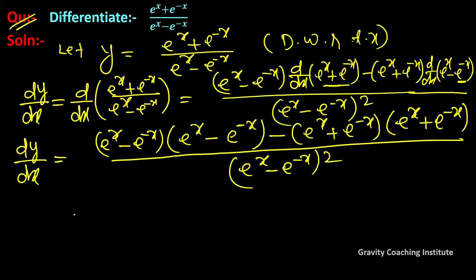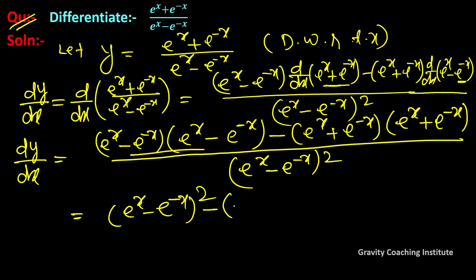यह दोनों identical terms हैं तो हम इसको whole square लिख सकते हैं। Numerator में (eˣ − e⁻ˣ)² minus (eˣ + e⁻ˣ)² होगा।